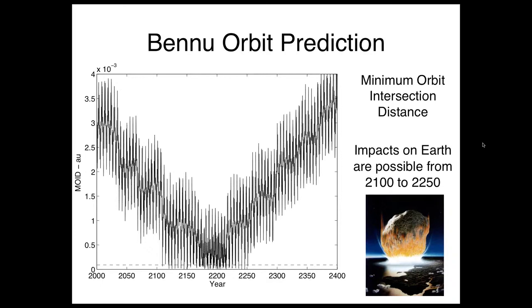So we have a very precise orbit for this asteroid, which allows us to look further out into the future than we can for most asteroids. What we're looking at here is a time history of what we call the MOID, the Minimum Orbit Intersection Distance. This is essentially the minimum separation between the orbital ellipse of the Earth and the orbital ellipse of the asteroid.